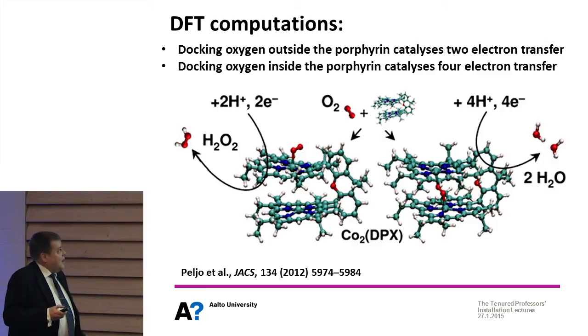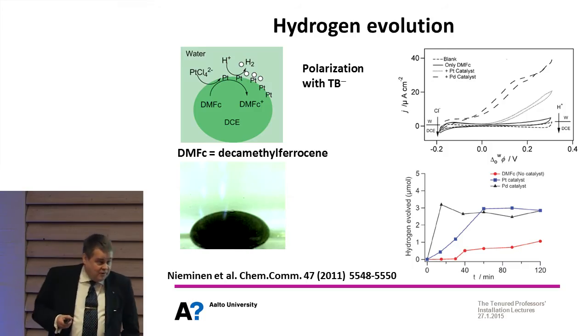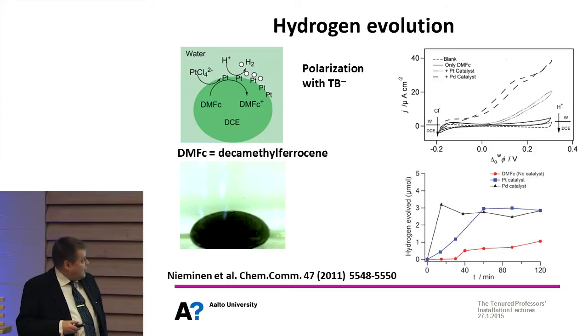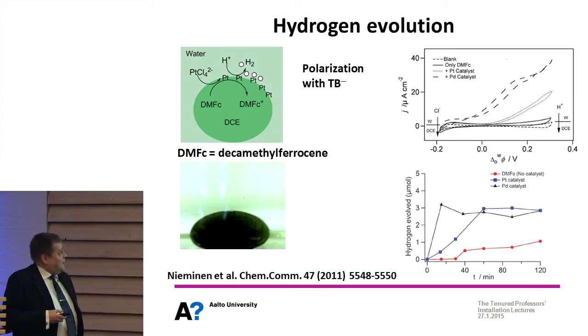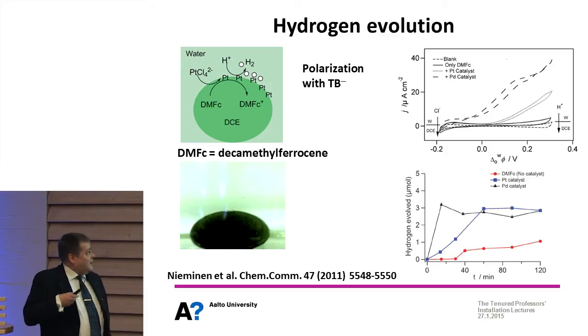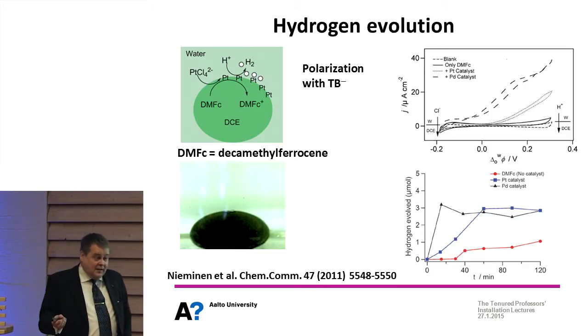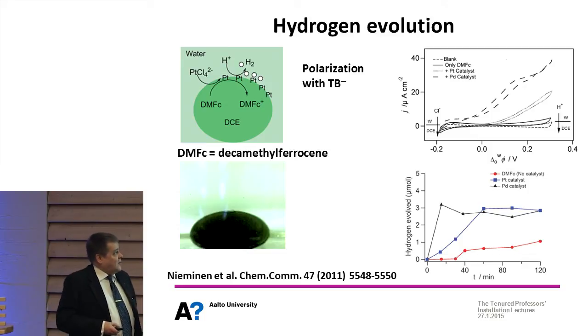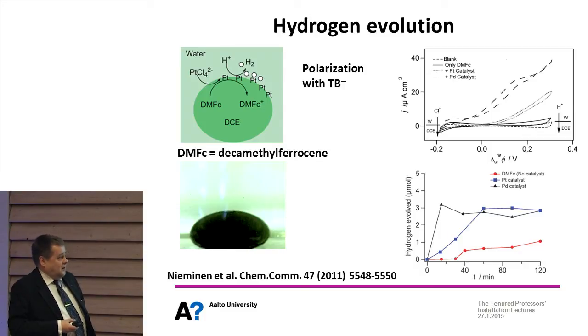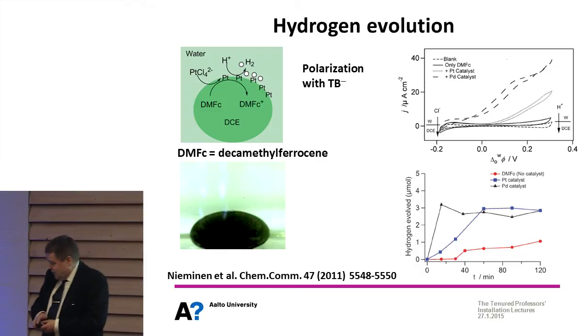Another example is hydrogen evolution - we can make hydrogen easy. This was done when my student was in EPFL in Lausanne visiting for summer and he did it there. The decamethylferrocene was this time the electron donor and palladium and platinum chloride was added in the aqueous phase. Now the decamethylferrocene gives electrons for reducing platinum as metallic platinum or palladium nanoparticles, and those are then catalyzing hydrogen production. You can see in the small voltammograms in the upper right corner what is the effect of the palladium and platinum - it's clear. We know that palladium is the best possible hydrogen evolution catalyst.